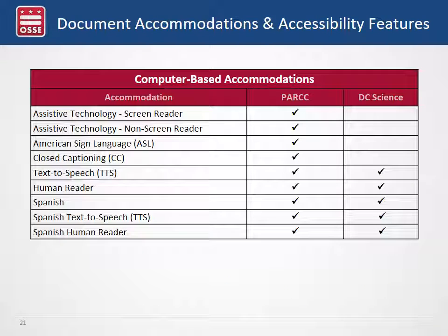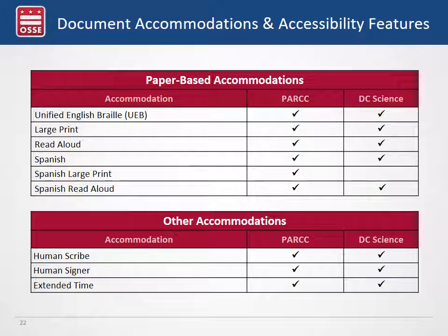Administration of the Park and DC Science assessments will be similar this year, but one area with slight differences is the accommodations provided. There is a list of computer-based accommodations within the Park assessment — some for math, some for ELA — with a corresponding check mark for those provided in the DC Science assessment for computer-based testing. All of this information is available in an appendix in the test coordinator manual, which also covers paper-based accommodations for both assessments. Use this as a reference when completing the SRPNP.